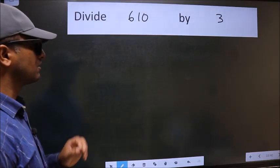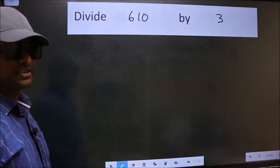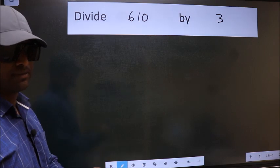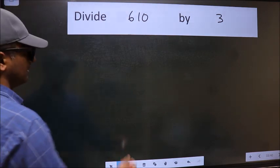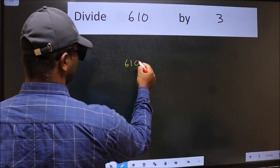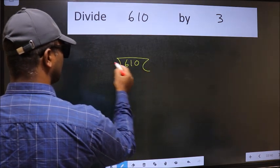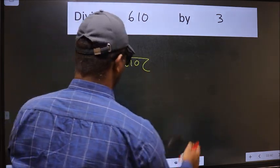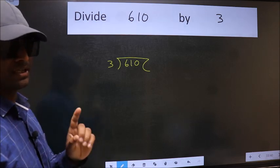Divide 610 by 3. To do this division we should frame it in this way: 610 and 3 here. This is your step 1.